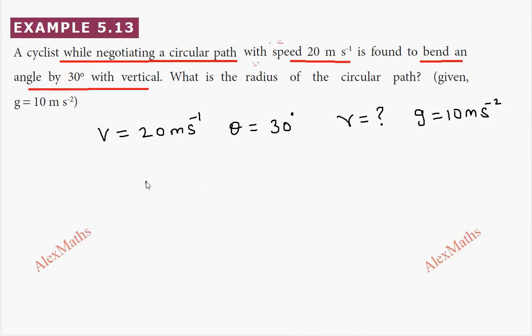We already know the formula: tan theta equals v squared by rg.